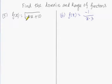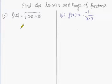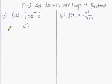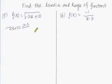Since we have a square root, the expression inside the square root — the numerator — should be greater than or equal to 0. That is the condition. So minus 2x plus 10 should be greater than or equal to 0.